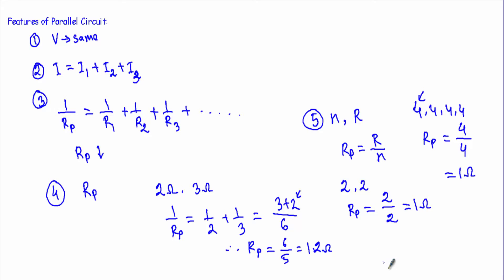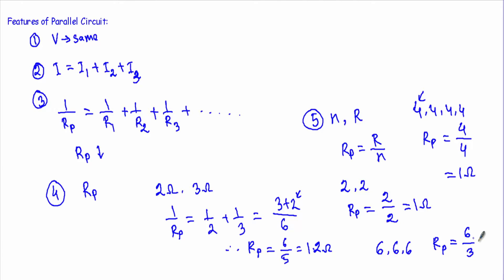For another example: if I have three resistances each with a value of 6 ohms connected in parallel, the parallel resistance Rp = 6/3 = 2 ohms.